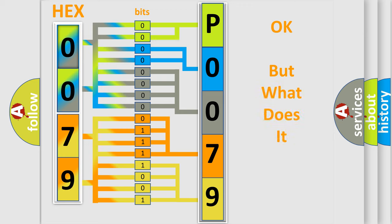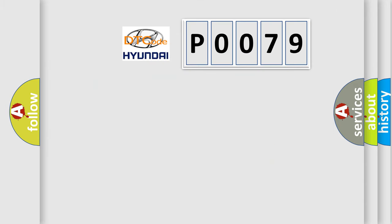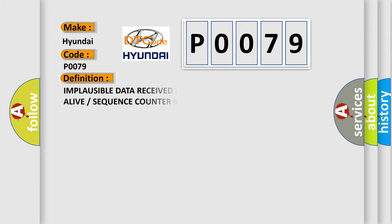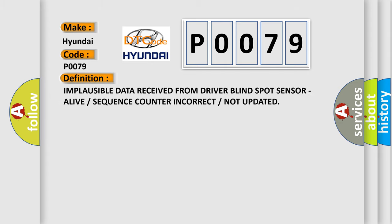We now know how the diagnostic tool translates received information into a more comprehensible format. The number itself does not make sense if we cannot assign information about what it actually expresses. So, what does the diagnostic trouble code P0079 interpret specifically for Hyundai car manufacturers? The basic definition is: implausible data received from driver blind spot sensor, alive or sequence counter incorrect or not updated.